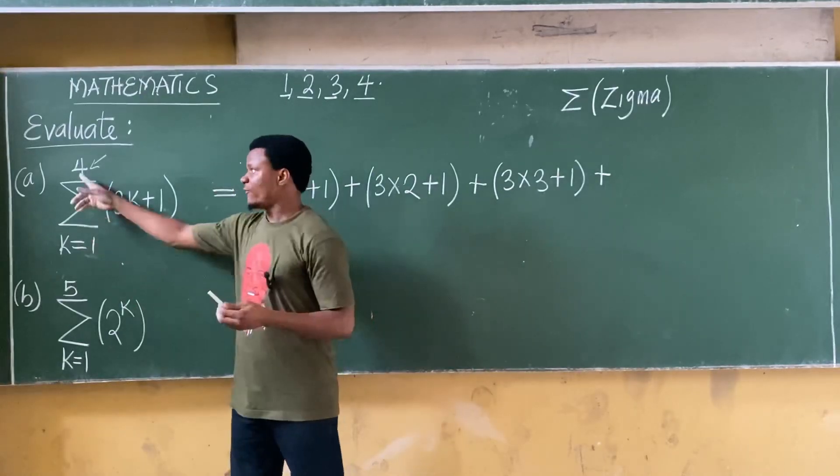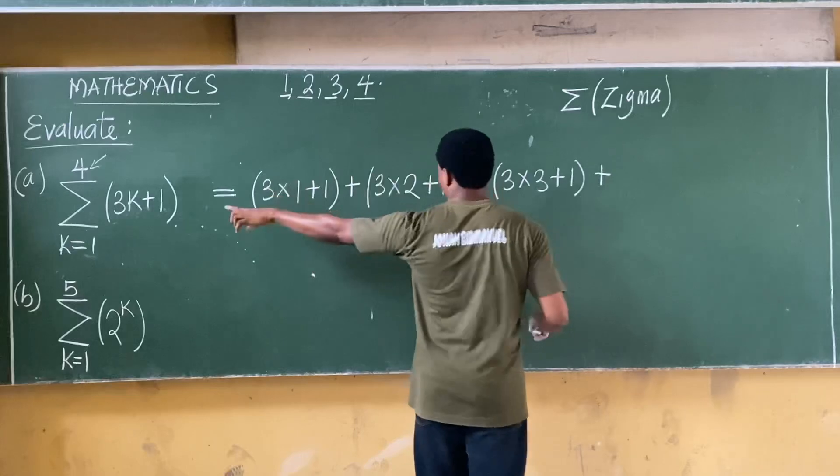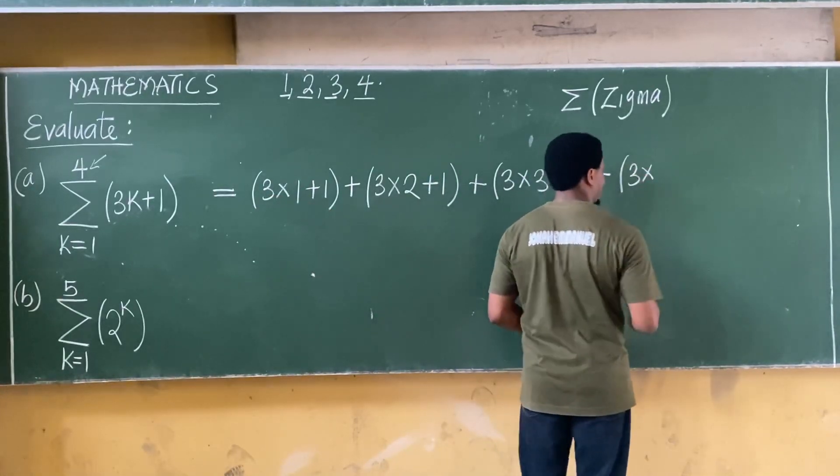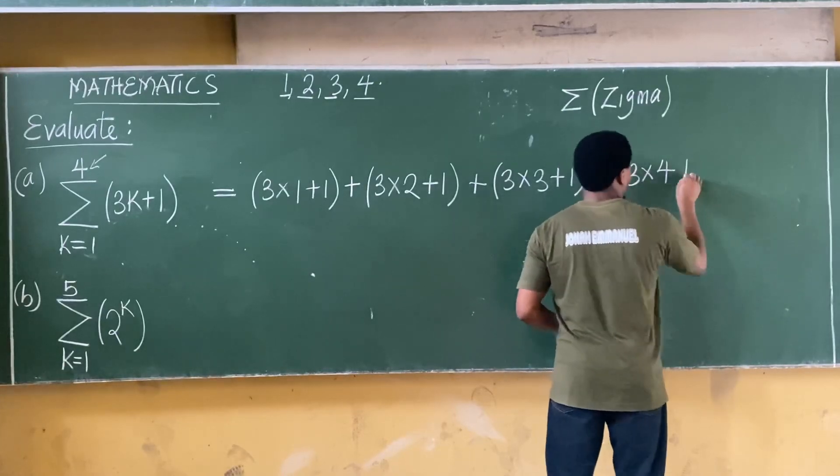In essence, 3k plus one now becomes three times k. In this concept now, or in this particular case, k is four, we will add plus one.